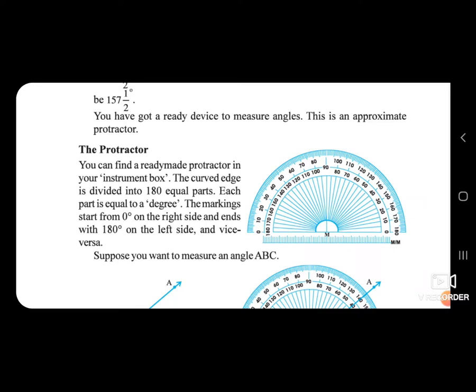Each part is equal to a degree. The marking starts from zero degree on the right side and ends with 180 on the left side, and vice versa.